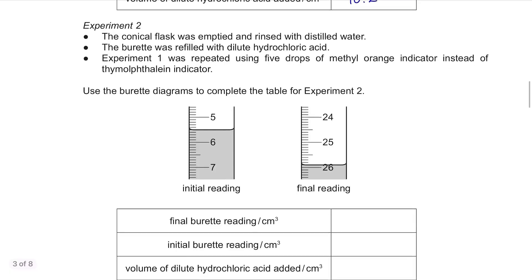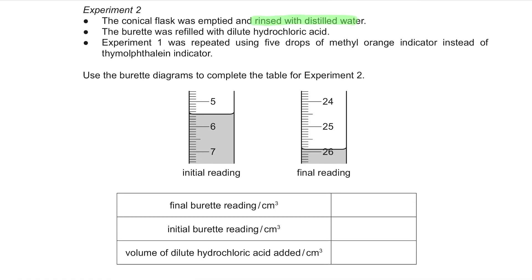Experiment 2. The conical flask was emptied and rinsed with distilled water. The burette was refilled with dilute hydrochloric acid. Experiment 1 was repeated using 5 drops of methyl orange indicator instead of thymolphthalein indicator. Use the burette diagrams to complete the table for experiment 2. Same thing, the final reading is 25.9 and the initial reading is 5.5. Remember to read the bottom of the meniscus. The volume of dilute hydrochloric acid added is 25.9 minus 5.5 which is 20.4.